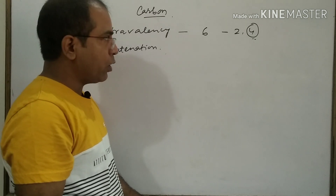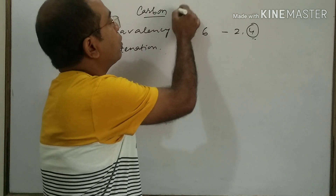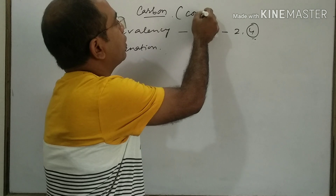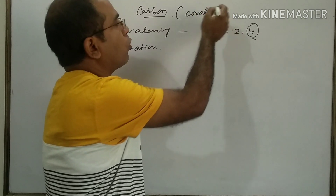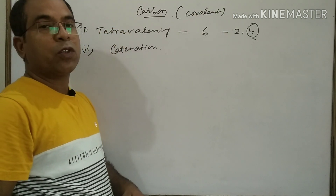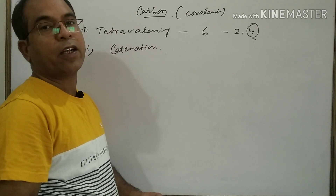Carbon shares electrons. So what are carbon compounds? They are covalent compounds — the compounds which are formed by sharing electrons.